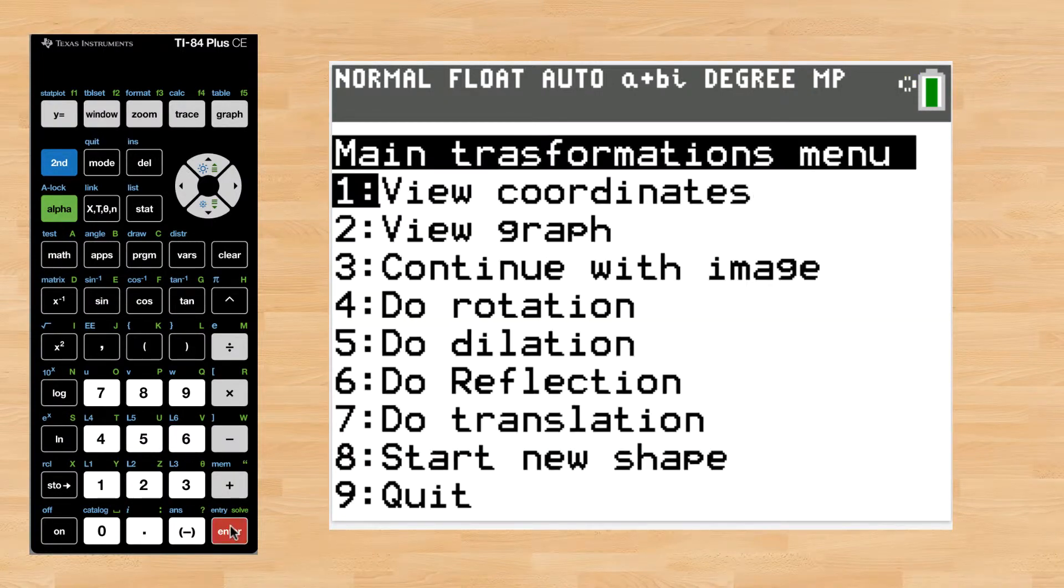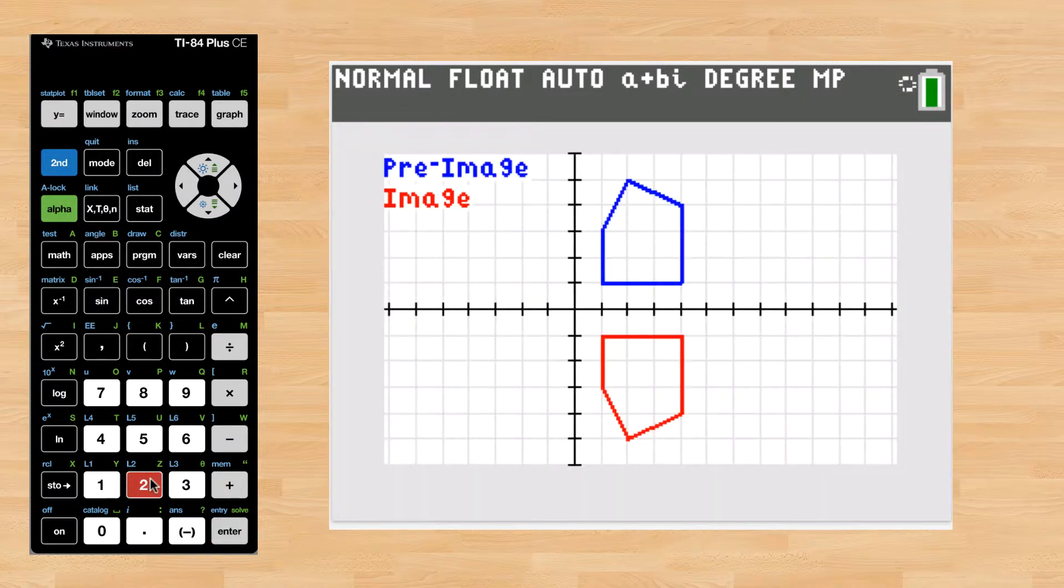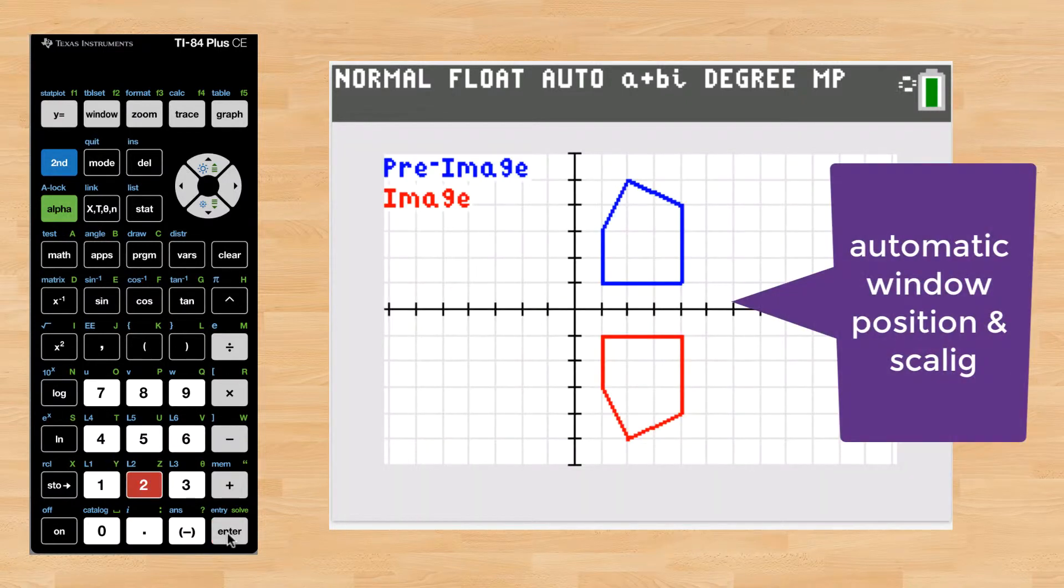Here's what it looks like if we reflect across the x-axis. Notice how the graph is always adjusted to square units so everything is scaled true.